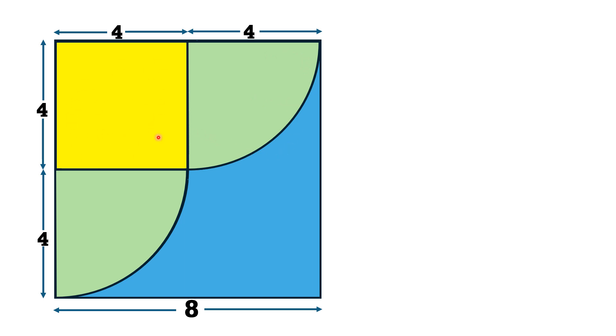Now, since for this yellow region, it is a square having side length equal to 4 units, so its area is equal to 16 square units.